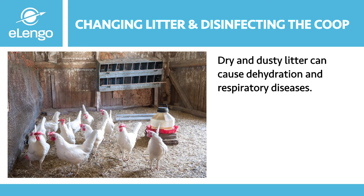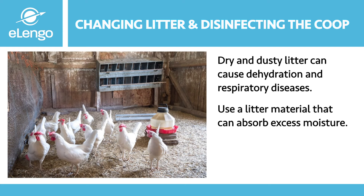A good rule of thumb for estimating litter moisture content is to squeeze a handful of litter. If it sticks tightly and remains in a ball, the litter is too wet and needs to be changed. If it sticks lightly, it has the proper moisture content. If it will not stick at all, it may be too dry. It is important to use a good litter material that absorbs excess moisture in the poultry house environment, such as wood shavings or sawdust.